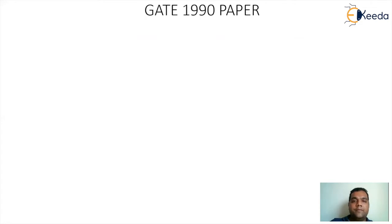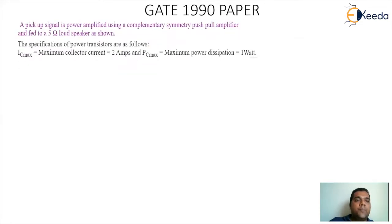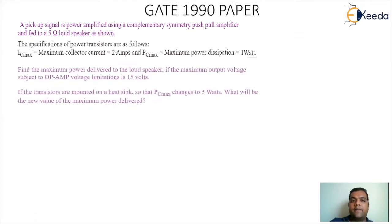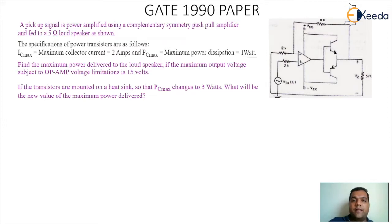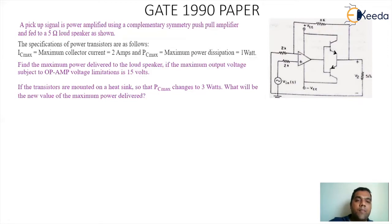Next question — this is from the GATE 1990 paper. A pickup signal is power amplified using a complementary symmetry push-pull amplifier and fed to a 5 ohm loudspeaker. The specifications of the power transistors are: IC max (maximum collector current) is 2 ampere, and PC max (maximum power dissipation of the transistor) is 1 watt. Find the maximum power delivered to the loudspeaker if the maximum output voltage subject to op-amp voltage limitation is 15V. Also, if transistors are mounted on a heat sink so that PC max changes to 3 watt, what will be the new value of maximum power delivered?